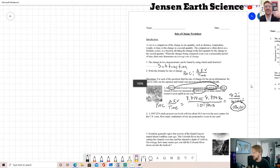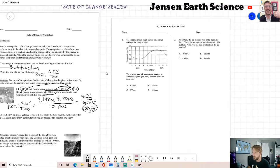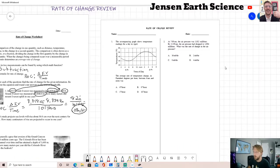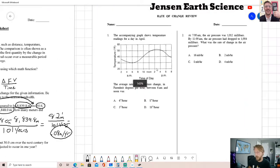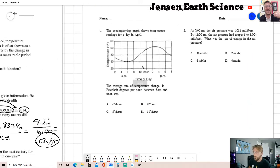Let's move on to something a little bit more challenging, like a Regents question. This one could be even more challenging because it incorporates a graph. Number one states: the average rate of temperature change in Fahrenheit degrees per hour between 6 a.m. and noon was. And this accompanying graph shows temperature readings for a day in April.